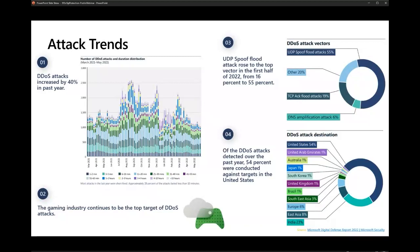Looking at the attack trends for 2022: approximately 28% of attacks lasted less than 10 minutes, 26% lasted 10 to 30 minutes, 14% lasted 30 to 60 minutes, and 23% of attacks were more than an hour in duration. The gaming industry continues to be the top target, mostly due to mutations of the Mirai botnet and low-volume UDP protocol attacks, since UDP is commonly used in gaming and streaming applications.